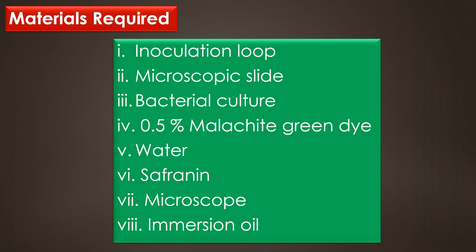The materials required for the endospore staining are: inoculation loop, microscopic slide, bacterial culture, 0.5% malachite green dye, water, safranine, microscope, and immersion oil.